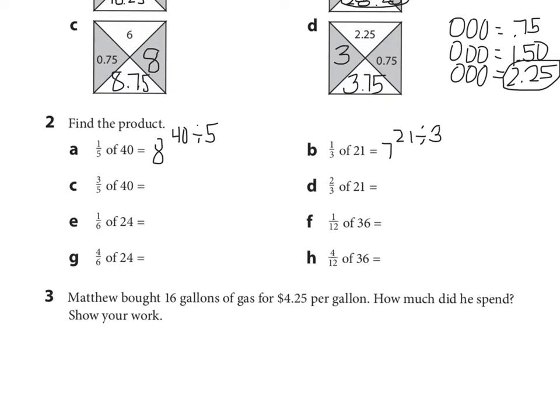C, 3 fifths of 40. So what I'm thinking is 40 divided by 5, which I already did up top on A, equals 8. 3 groups of 8. 8 times 3 is 24. D, 2 thirds of 21. I'm thinking 21 divided by 3, which I already did, which is 7. Now I'm taking 2 of those groups. So my answer is 14. Looking at E, 1 sixth of 24. I'm thinking 24 divided by 6, which is 4. 6 times 4 is 24. So 1 sixth of 24 is 4. 1 twelfth of 36. I'm thinking 36 divided by 12, which is 3.